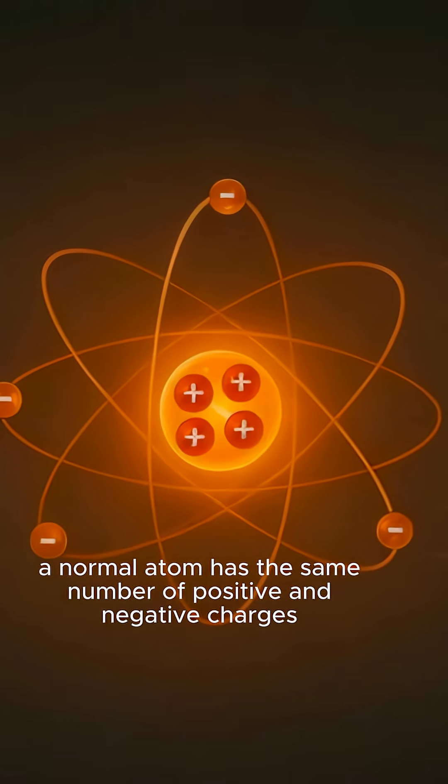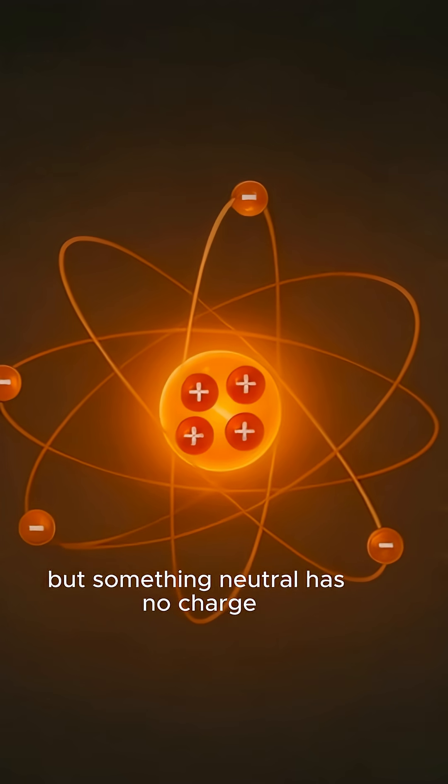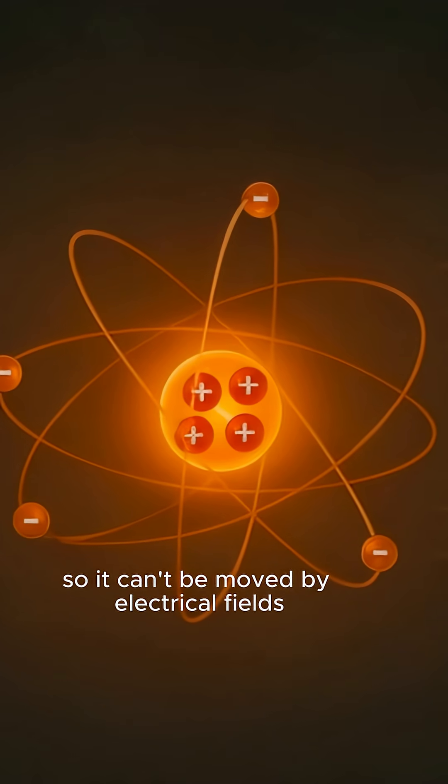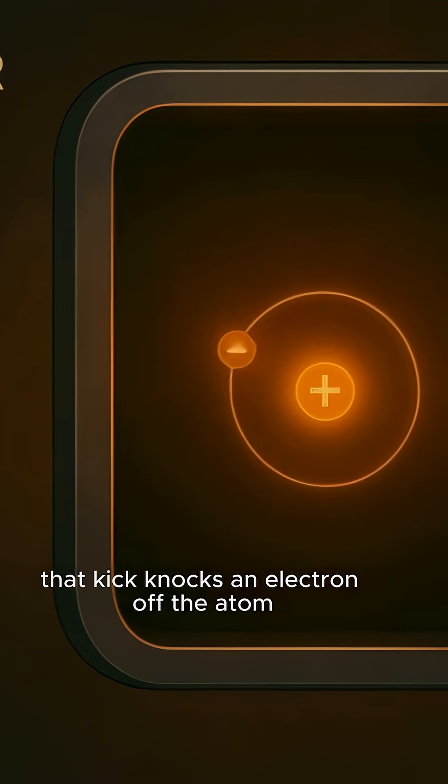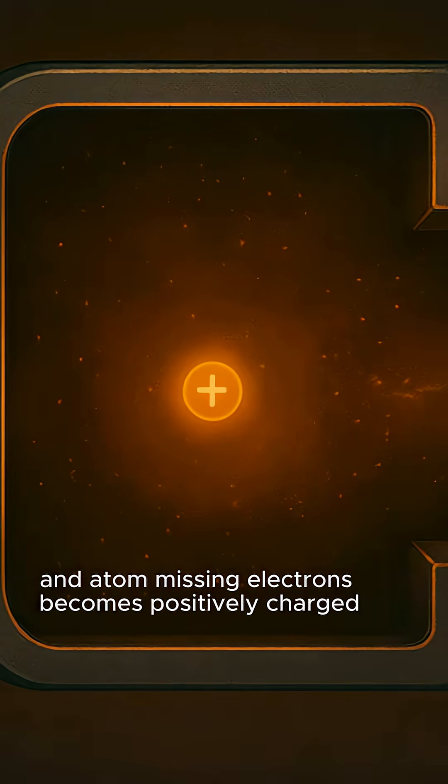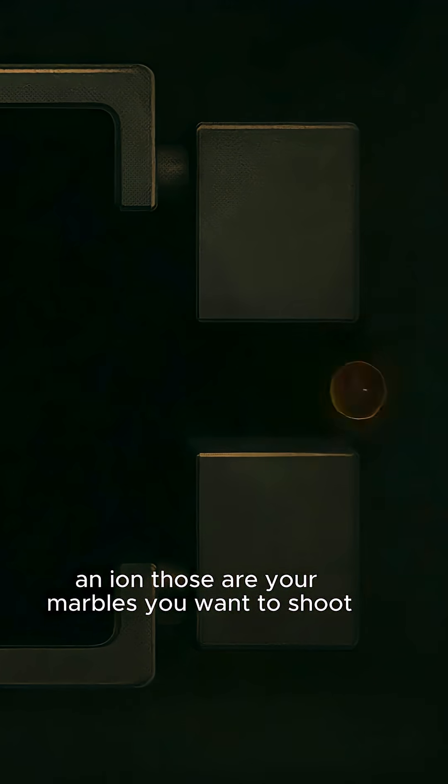A normal atom has the same number of positive and negative charges, but something neutral has no charge so it can't be moved by electrical fields. So they zap or heat a gas, like hydrogen. That kick knocks an electron off the atom. An atom missing electrons becomes positively charged, an ion. Those are your marbles you want to shoot.